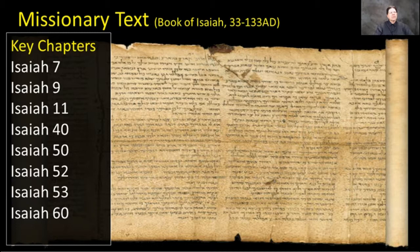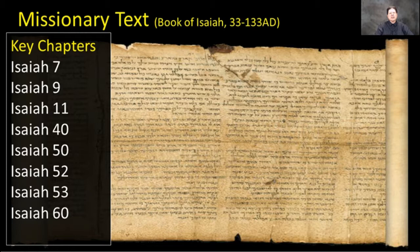We have a missionary text in the book of Isaiah, and I'm going to talk about how it was used to convert synagogues to Christianity from 33 to 133 AD. The key chapters used were Isaiah 7, 9, 11, 40, 50, 52, 53, and 60 — eight chapters with tremendous messianic reference to Jesus Christ. These were used to evangelize the synagogues. The rabbis had to actually change the book of Isaiah — they created a falsified version to get rid of these verses. The purpose of this Bible study tonight is to prove that the rabbis changed the book of Isaiah to write Jesus out of it.